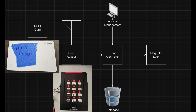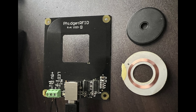Low Frequency RFID can be used for access control, where you have a card and put it against a reader. It sends a signal to the door controller, which looks up the card in the database and then chooses to open the magnetic lock. RFID can also be used in hobby projects — EM4100 tags give 40 bits of data, and a .NET application can do whatever you want with it.